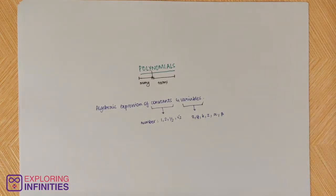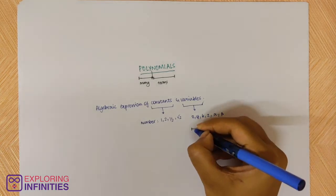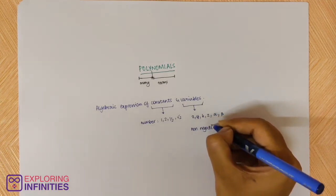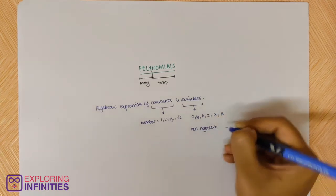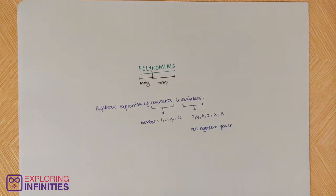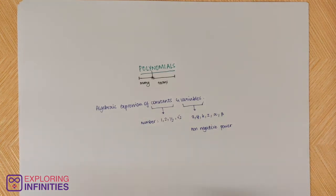One condition about variables that you need to remember is: variables need to have a non-negative power. That means that in our expression, if all the variables have a non-negative power, that is when you say that it is a polynomial.